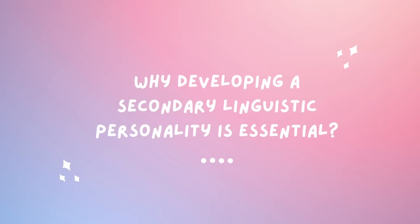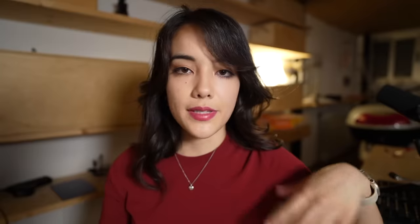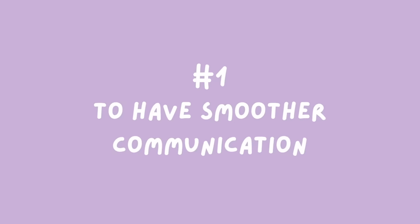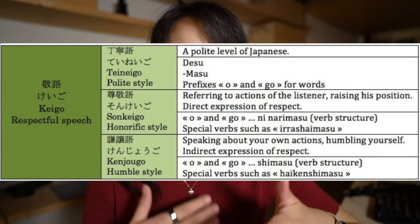So why is developing a secondary linguistic personality important? These examples are just my opinions, so take them with a grain of salt. But I think it leads to better and smoother communication. For example, if you're learning Japanese and you ignore the culture around keigo — the way you show respect when talking — even if you speak perfect Japanese, you might sound grammatically correct but come across as disrespectful. So in order to avoid miscommunications and misunderstandings, I think developing a secondary linguistic personality is really important.